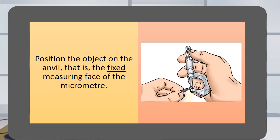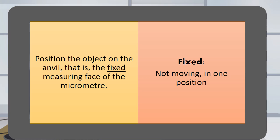Position the object on the anvil, that is the fixed measuring face of the micrometer. Fixed means not moving, in one position.